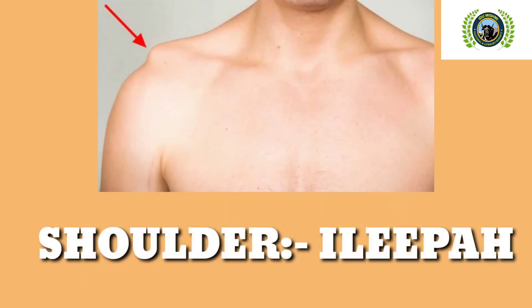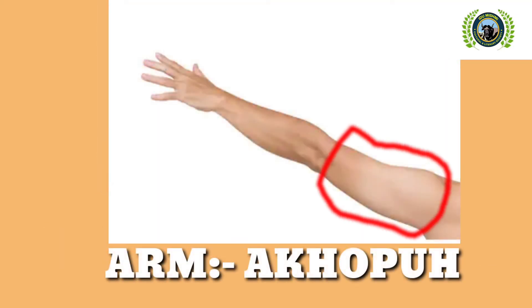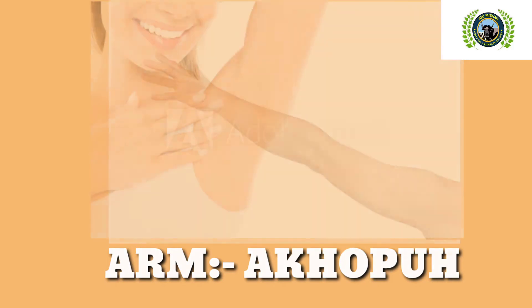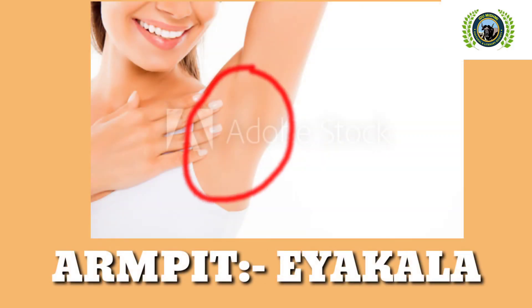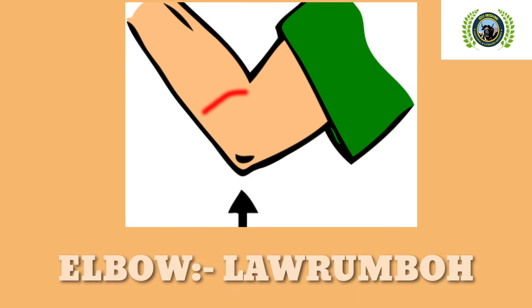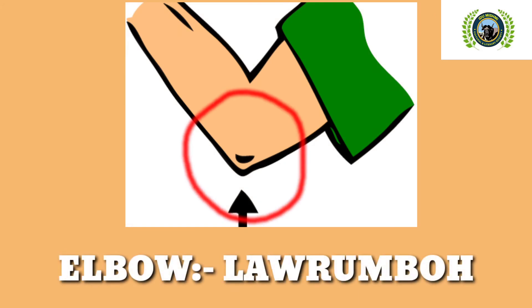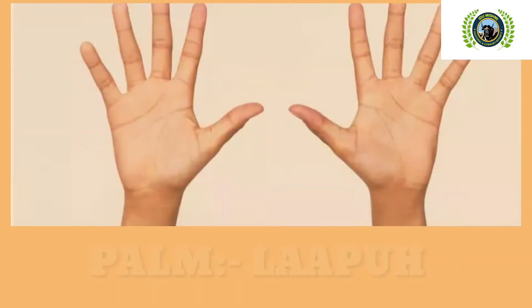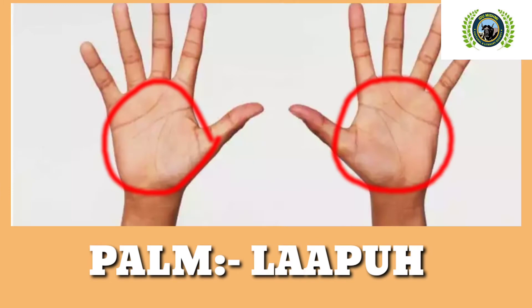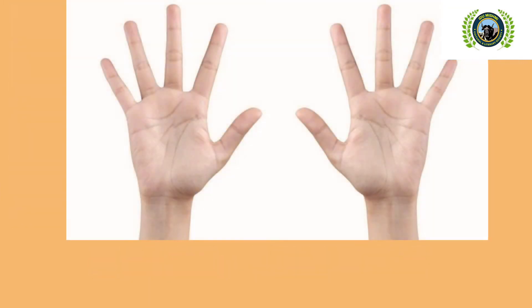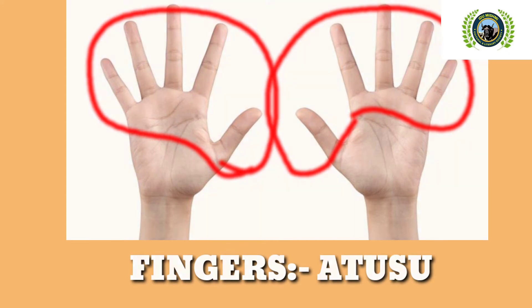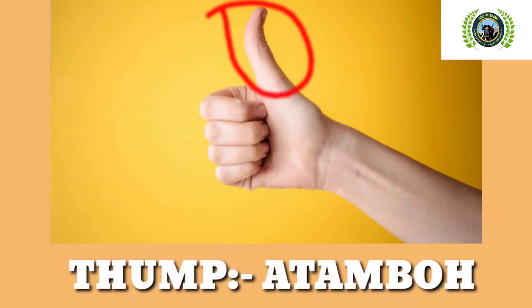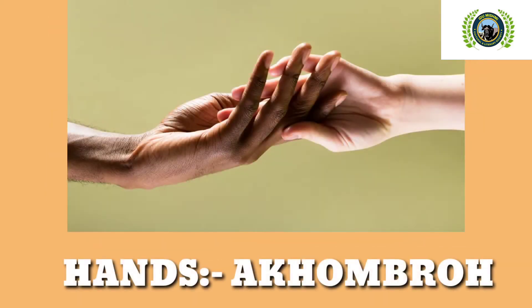Neck. Shoulder. Arm. Armpit. Elbow. Wrist. Palm. Fingers. Thumb — Atambo. Hands — Akhumbra.